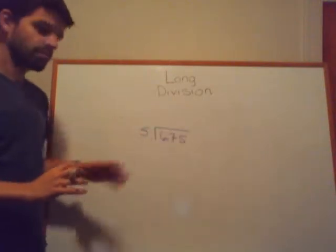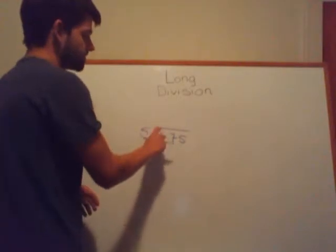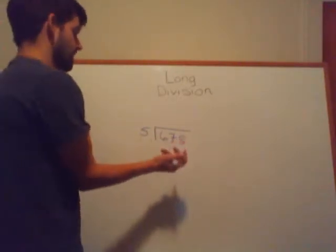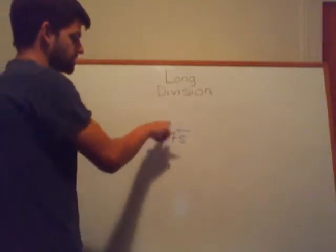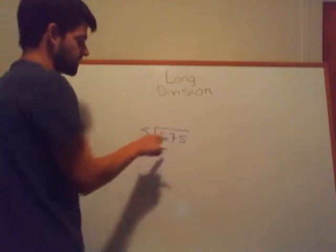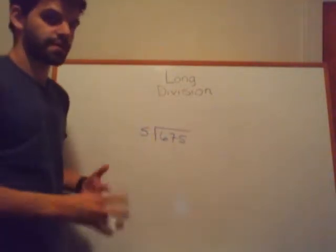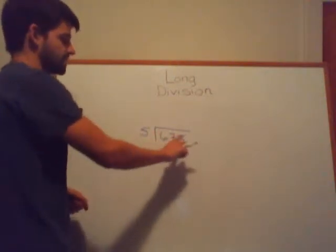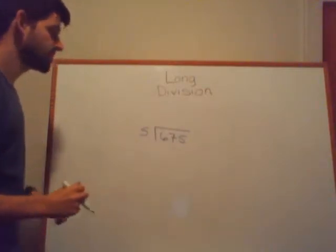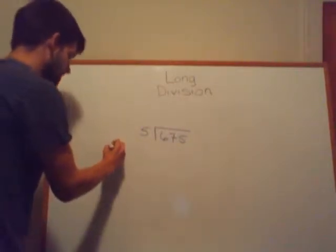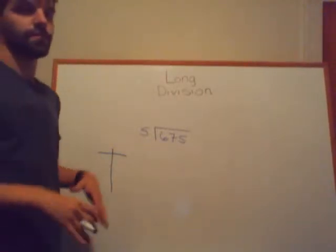One analogy commonly used is to imagine 675 is in the house — it's the number being divided. 5 is trying to go into the house; it's at the front door, trying to go into 675. So what we're trying to do is figure out how many times 5 can go into 675 without going over.